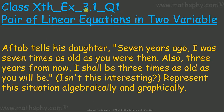First question: Aaktaab tells his daughter, 'Seven years ago I was seven times as old as you were then, and three years from now I shall be three times as old as you will be.' Represent this situation algebraically and graphically. So seven years ago his age was seven times more than her age, and after three years his age would be three times more than her age.